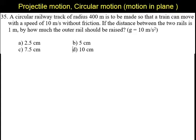This is the problem of banking of curved tracks. We are given g equal to 10 meters per second squared and the alternatives are 2.5 centimeters, 5 centimeters, 7.5 and 10. So to solve this, this is the banking of curved tracks, isn't it?